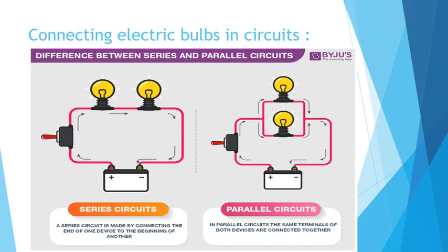So what about parallel connection? The parallel connection means that the lamps are connected in branches. Every lamp has its own branch, its own route, its own wire.